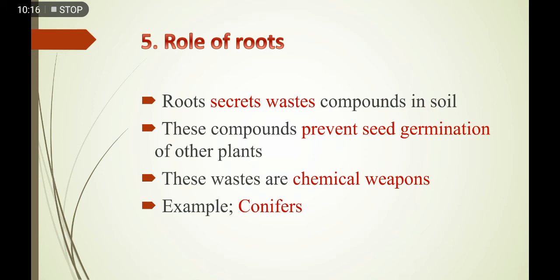For example, in conifers — ہم دیکھتے ہیں کہ konifers کے plants کے اردگرد صرف اسی species کے plants پائے جاتے ہیں۔ اس کی وجہ یہی ہے کہ ان plants کی جڑوں سے خارج ہونے والے waste compounds دوسرے plants کی seeds کی germination کو stop کر دیتے ہیں۔ اس طرح سے یہ پانچ مختلف mechanisms plants میں excretion کے لیے کام کرتے ہیں۔